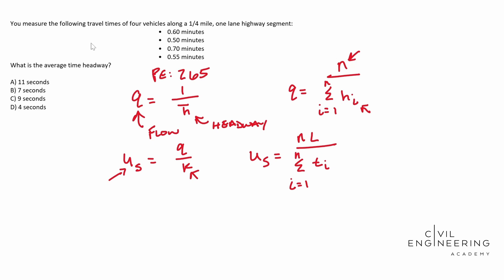We have everything that we need right now. We have N, which in this case is going to be the number of our vehicles. L is the length of our segment. And T sub I is going to be each individual time. So we need to add our times up and that's what that sigma means.